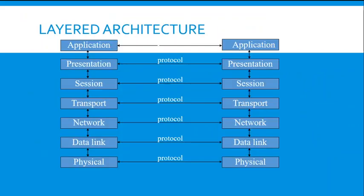As you can see from the illustration, these are the seven layers of the architecture: application, presentation, session, transport, network, data link, and physical. They have a protocol between each of them. Try to remember this step by step, as these are necessary for the Open System Interconnection Model.